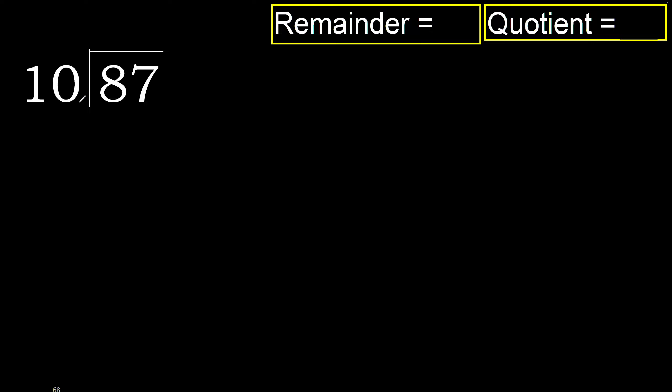87 divided by 10. 8 is less, therefore next. 87 is not less.